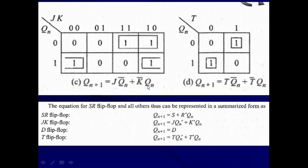Similarly, we can obtain the characteristic equation for the JK flip-flop. Qn+1 is a function of three variables: J, K, and present output Qn. So there are 2³=8 locations for the three-variable Karnaugh map: M0, M1, M2, M3, M4, M5, M6, and M7.